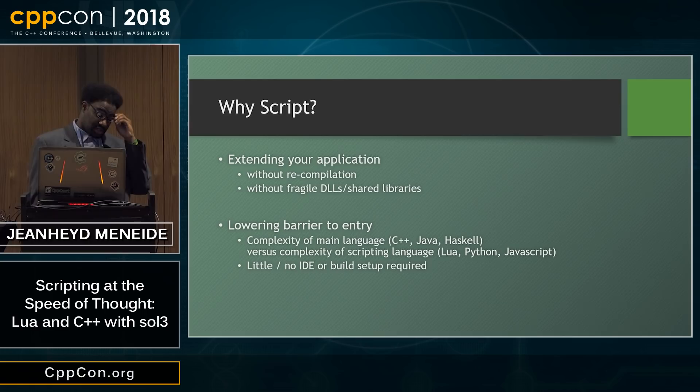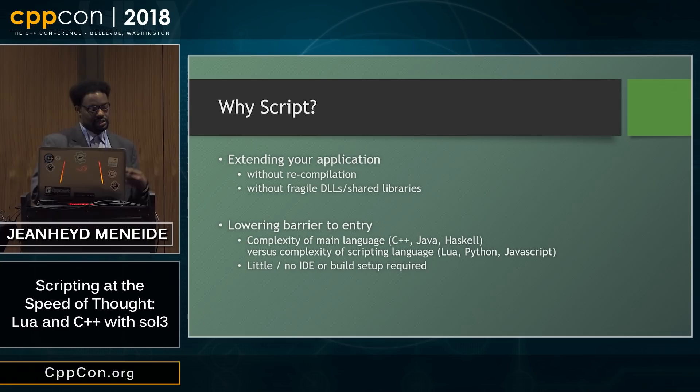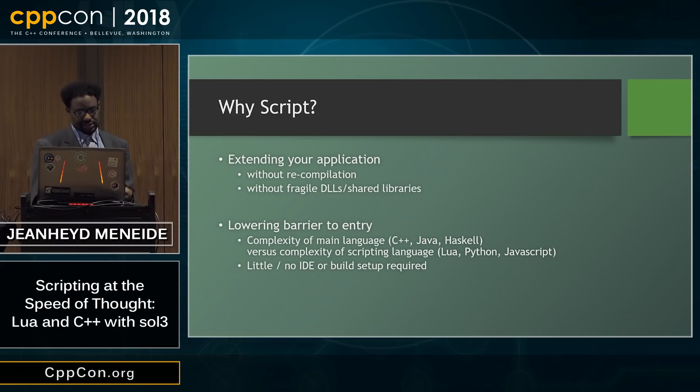It's also about lowering the barrier to entry. Scripting languages don't require as much setup. Everybody here has tried to use something like C++ or even Java or even Haskell, and it takes quite a bit of build. With Haskell, you need to get Cabal and Hackage, and you need to go to Hackage to get the packages you need. Java has all batteries included in its standard library, but getting other things is still a little bit difficult. C++, of course, is notorious - the build story here is just not great.